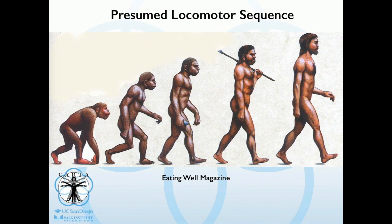This is the presumed locomotor sequence in our evolution, and knuckle walking always shows up here. Bonobos and chimpanzees are knuckle walkers. Gorillas are also knuckle walkers, but they do it completely differently than chimpanzees and bonobos do. Orangs walk on both their front legs but do fist walking. So although we've combined all these apes into one locomotor situation, it's completely different. The question is: how did it all come about, and what was our ancestor like when we split from the chimps and bonobos?